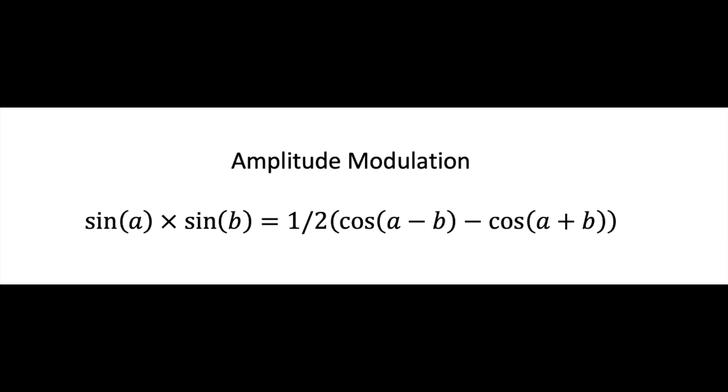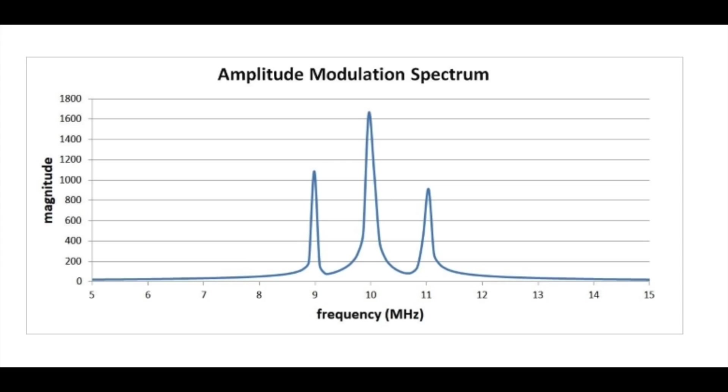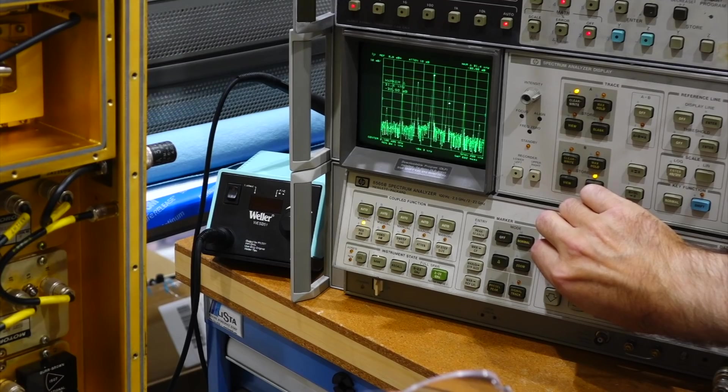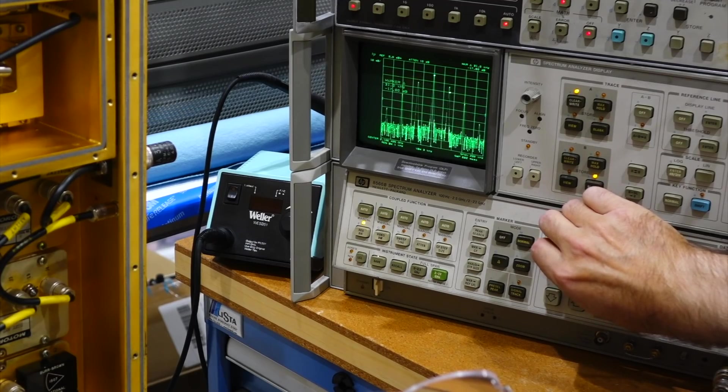one at the sum frequency and one at the difference frequency. So you get the spectrum you are used to, just like this, with two side peaks, one for the sum and one for the difference.